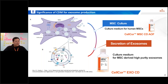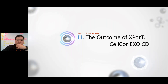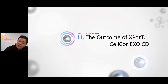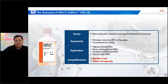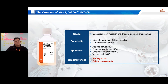In the extracellular vesicle field, there are many quality control steps involving tetraspanin markers and purity markers in exosomes. So purity is just as important as particle yield. The outcome of the EXPORT platform is Celcar MSC CDAOF — an optimal cell medium specifically designed for mass production, research, and drug development of exosomes. Celcar MSC CDAOF provides several key advantages compared to traditional media formulations. First, it eliminates more than 95% of impurities, ensuring the production of pure exosomes with minimal contamination.